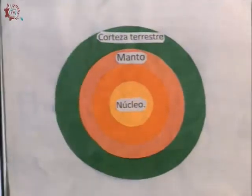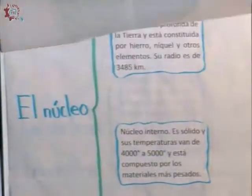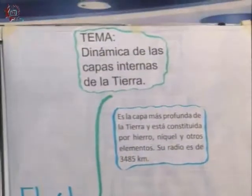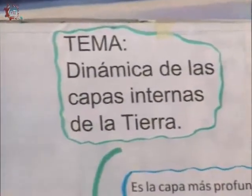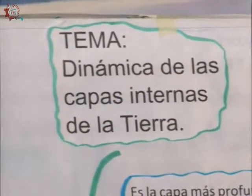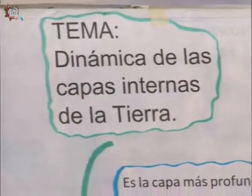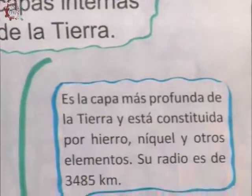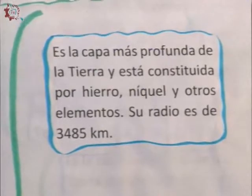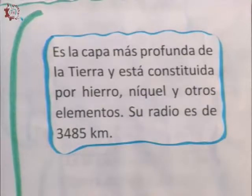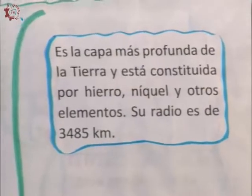I will now go through the characteristics. We have the nucleus. The nucleus is the deepest layer of the Earth and is composed of iron, nickel, and other elements. Its radius is 3,485 kilometers. As I showed in the diagram, the nucleus has an internal and an external part. Compared with the size of planet Earth, both parts are quite large.